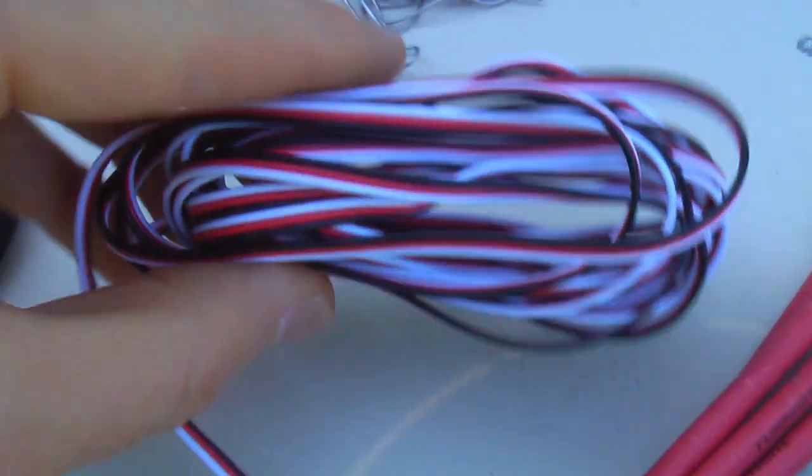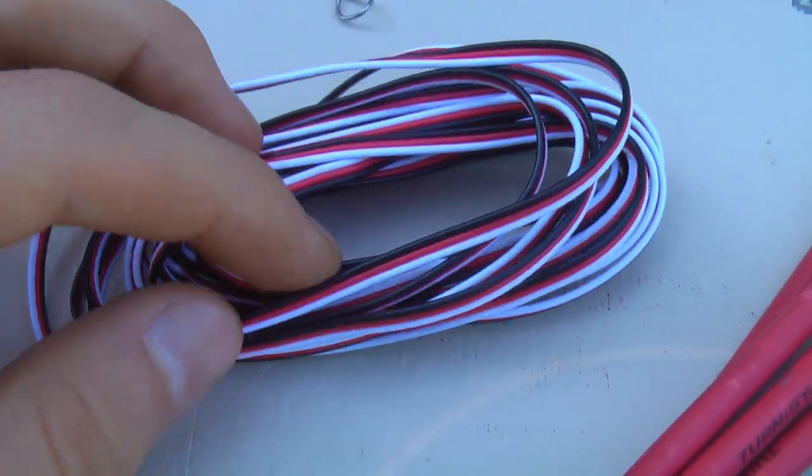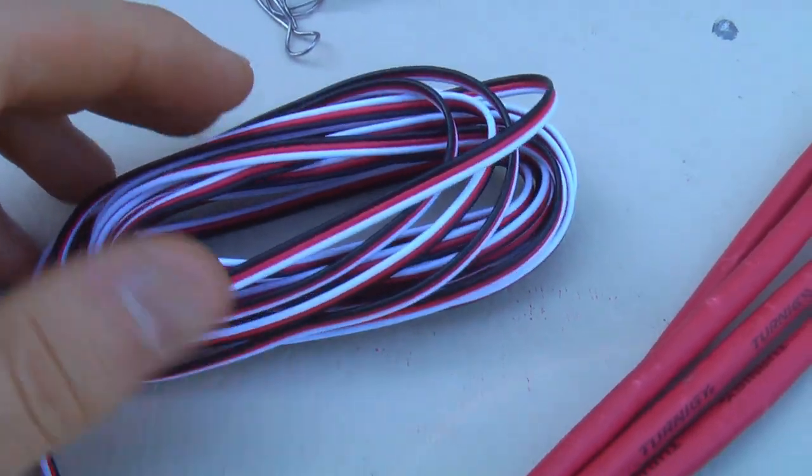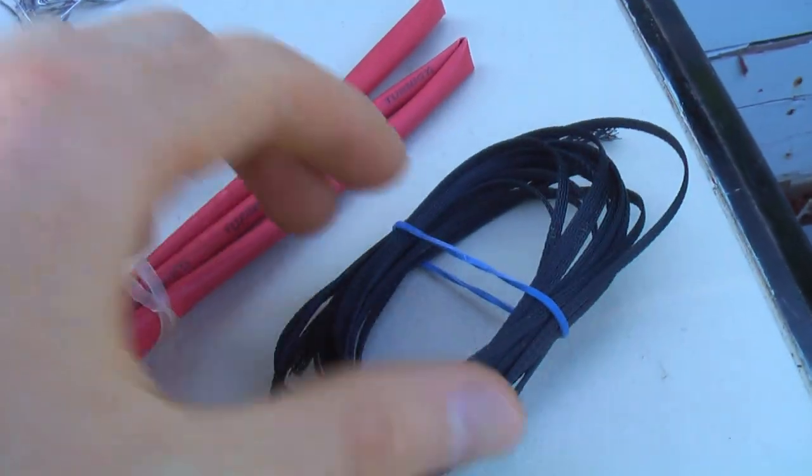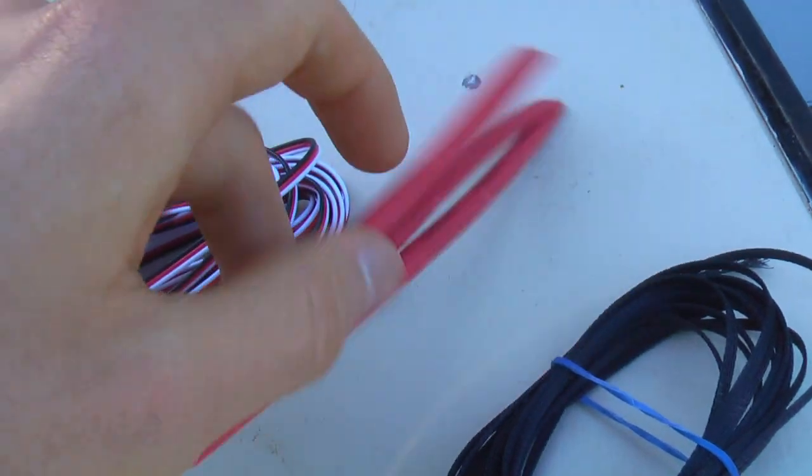And for the wire I'm just using 26 average gauge servo wire from Hobby King. It's pretty cheap stuff, it's like 50 cents a meter. And I'm also using some 3mm plastic sleeving to go over the wire just to give it a really cool look, as well as some 5mm heat shrink tubing.